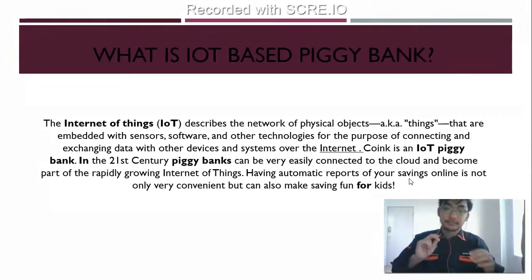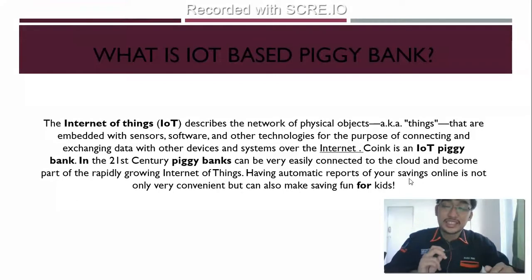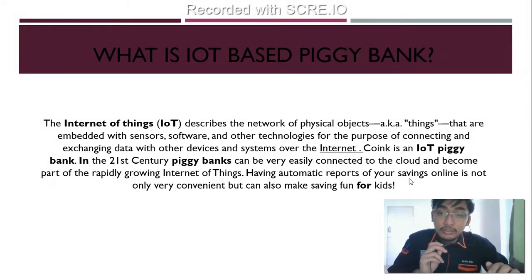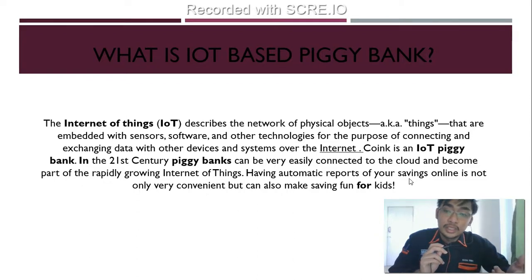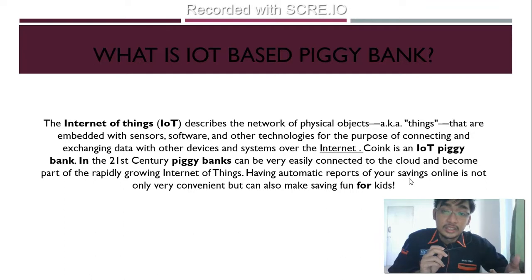What is an IoT-based piggy bank? The Internet of Things (IoT) describes the network of physical objects, known as things, that are embedded with sensors, software, and other technologies for the purpose of connecting and exchanging data with other devices and systems over the internet.